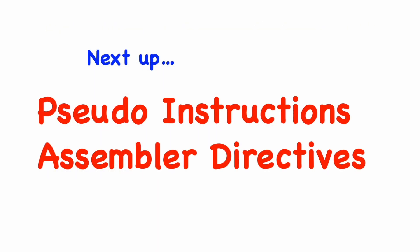We've now covered the instructions that alter the flow of control: the jump, call, and return instructions, as well as the conditional branching instructions. Several of these are pseudo-instructions, and we've also learned about the JAL, JALR, LUI, and AUIPC machine instructions used to implement them. In the next video we'll be looking at more pseudo-instructions and describe the assembler directives. Thanks for watching.